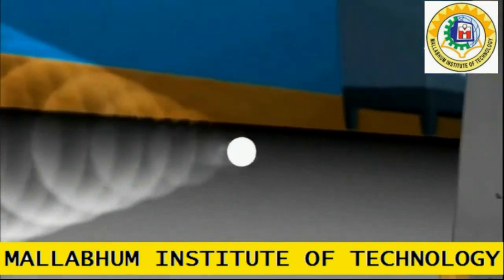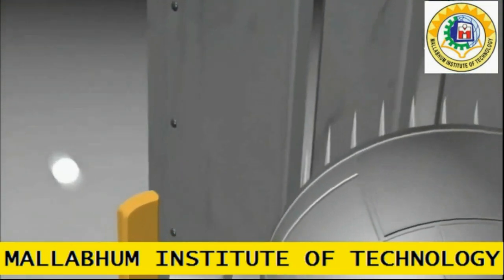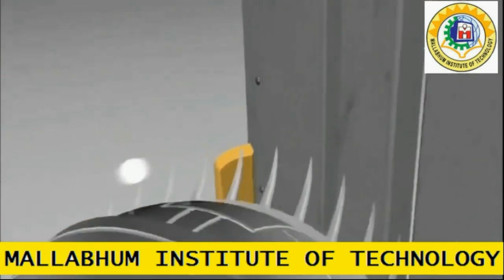But this time, what happens made the scientists speechless. Now the electron shows its particle nature and forms only two straight lines on the back wall.